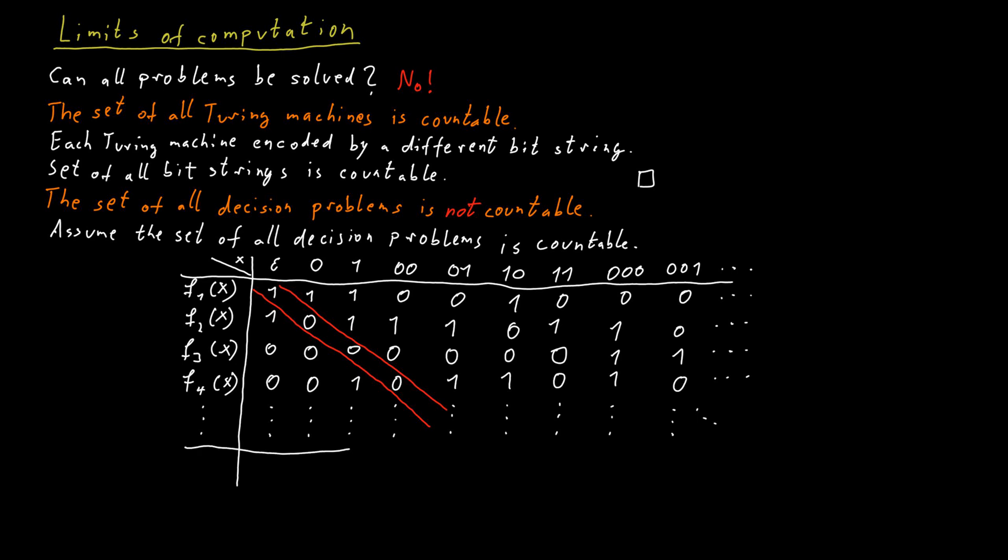Our new function would now change each of those values. So our new function that we want to construct would say on an empty input, so x is equal to the empty bit string, we would have an output of 0 instead of 1. And then on the input that just consists of a 0, we would get output 1 instead of a 0, and so on. So we just flip all of those diagonal entries, and this gives us a specification for a new function.